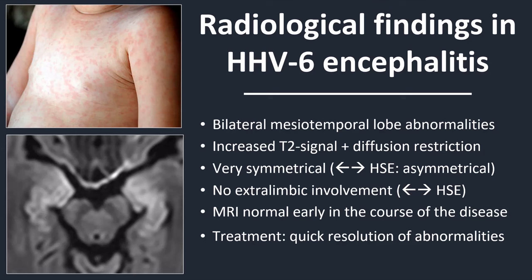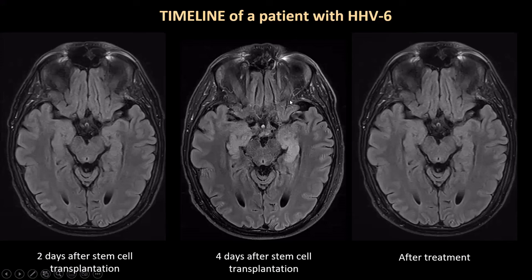MRI in human herpesvirus type 6 encephalitis can be normal early in the course of the disease. After the initiation of treatment, there tends to be complete resolution of the abnormalities, which is also different from what we see in herpes simplex encephalitis. Looking at the time course: originally the MRI was completely normal; two days later there was bilateral hippocampal swelling and edema; after treatment, the abnormalities completely disappeared — no atrophy, gliosis, or tissue destruction.